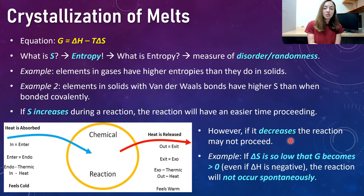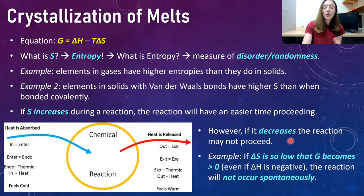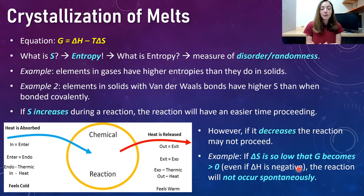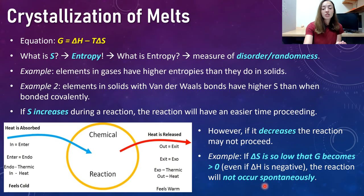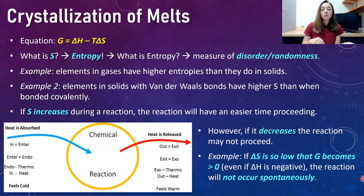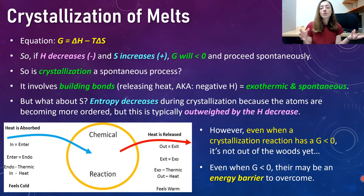You can't just predict a reaction's spontaneity based on S or based on H alone — it takes both values. Say you have an H that is negative, meaning the reaction is releasing heat. That would mean your reaction is likely to be spontaneous. However, if your change in entropy decreases so much that G becomes positive or goes above zero, your reaction cannot occur spontaneously. So both H and S depend on each other for the overall G value.